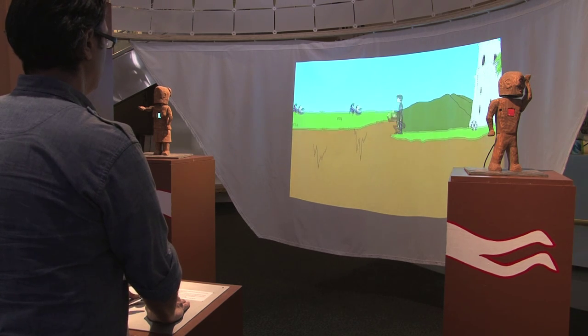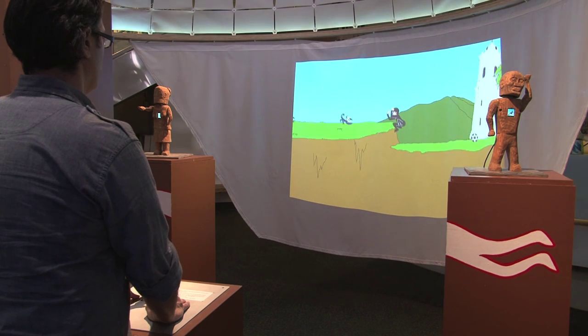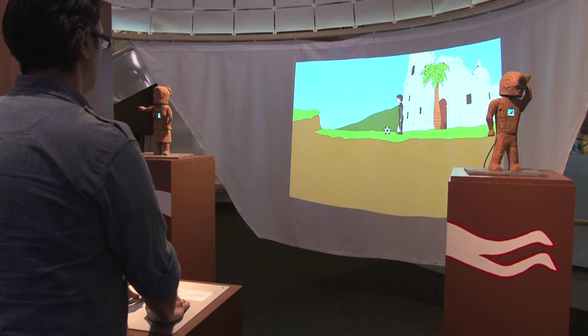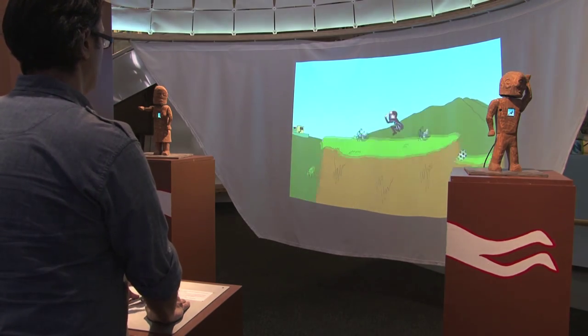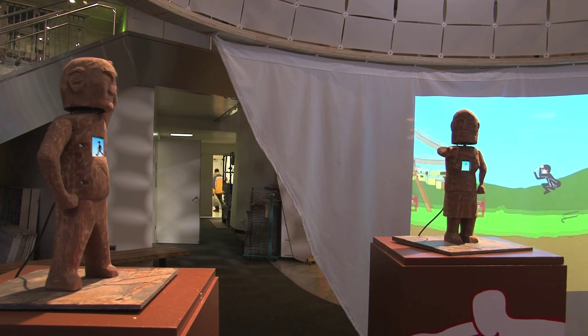The obstacles are poisonous scorpions and a waterhole. In order to leap onto the platform with the scorpions, the boy must use a soccer ball. Later, to advance beyond the water, the boy must destroy the frame of a house and use the wood as a bridge.